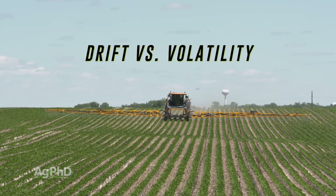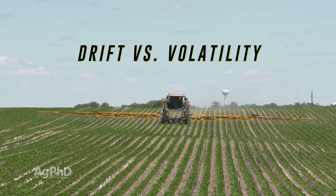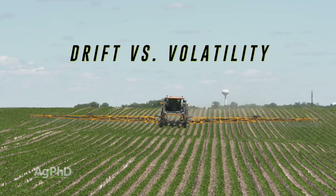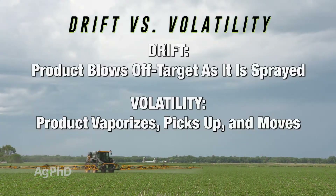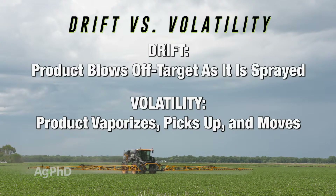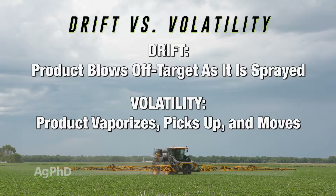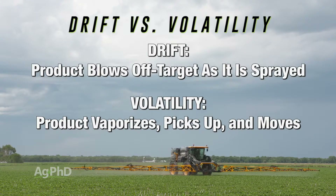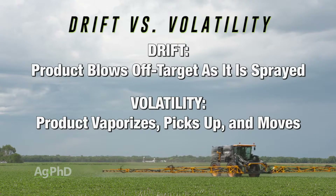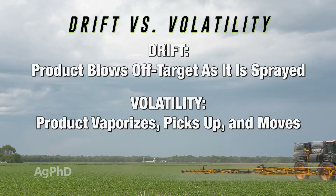Terminology is very important because there's getting to be some regulation around the term drift. When we think about drift, like Brian said, drift to a farmer means it physically blew away as you were doing it. Volatility means it landed, it picked up and moved later.